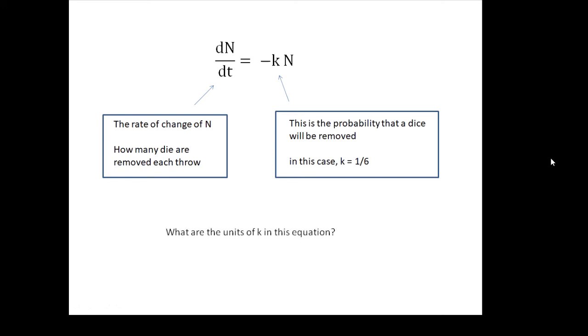What are the units of k in this equation? Well, if dn/dt is a number per throw, and then on the right hand side, that must mean the units have to be the same, or at least equivalent. So the units of k will be throws to the minus one. Very often, the units of k are some time, unit of time to the minus one, seconds to the minus one, or years to the minus one, or months to the minus one. Some unit of time to the minus one is the units of k.